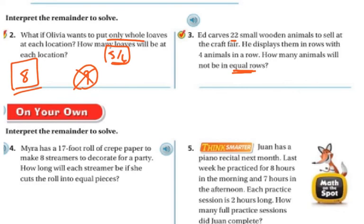This one says, Myra had a 17 foot roll of crepe paper to make 8 streamers to decorate for a party. How long will each streamer be if she cuts the roll into equal pieces? Well, with streamers, I can easily cut them, right? This one, they wanted whole animals, but I can cut a streamer. So this one can have a fraction. This one right here, if you watch the math on the spot, it will help you with this one.